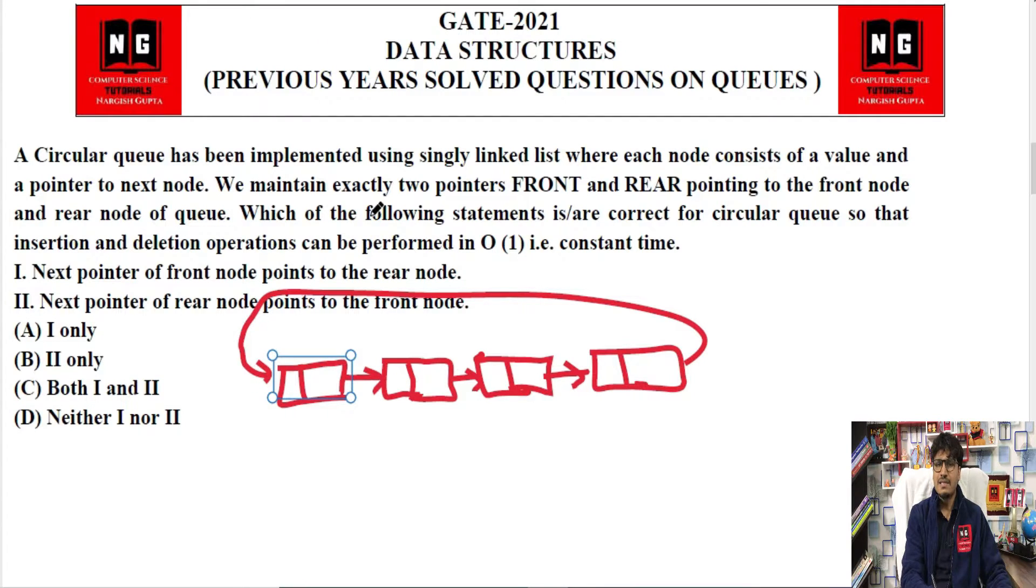After that, we maintain exactly two pointers: one is called front, and second is called rear, pointing to the front node and the rear node. This one we call rear, which points to rear. Front pointer points to front.